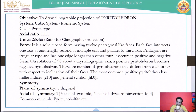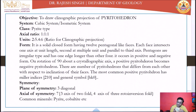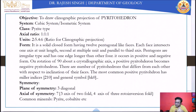The pyritohedron is made up of 12 pentagon faces — it is a closed form and it belongs to the pyrite class of the cubic system, not the normal class of the cubic system, so the symmetry elements will differ.